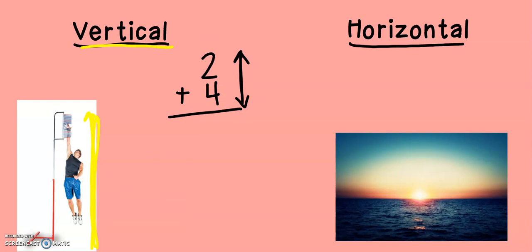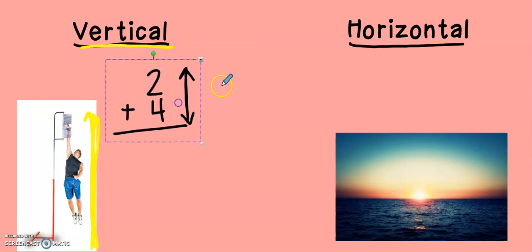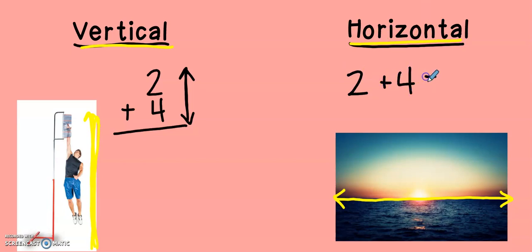Now, the other picture is of a horizon. The horizon is the line right where the land or the water meets the sky. The horizon goes side to side. So, horizontal is an equation that looks like this. It goes from side to side. They are both the same equation, but I can write them in two different ways. If I have four, five, six. Four, five, six. No matter which way I put it, I get the same answer.